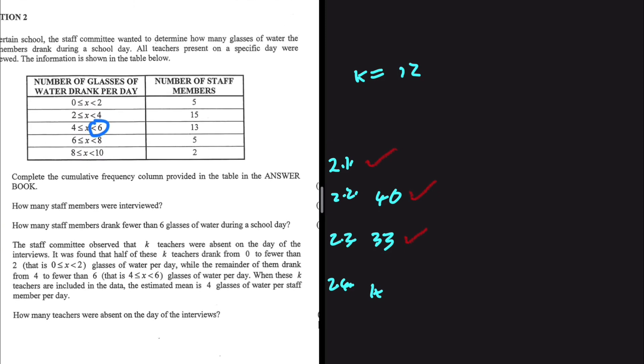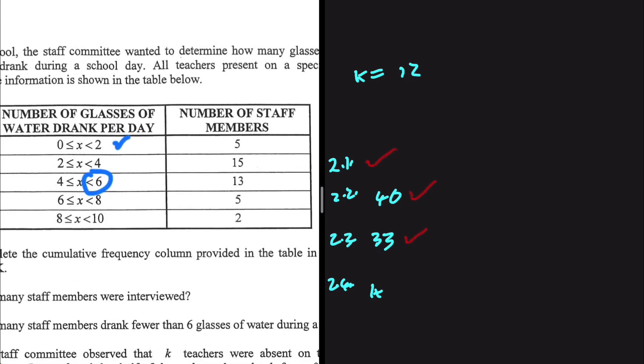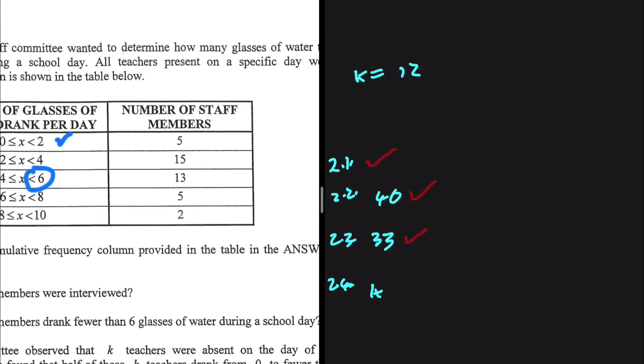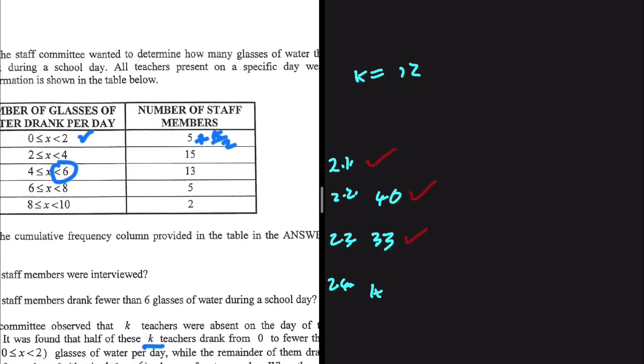So k teachers were absent and then half of these k teachers drank between zero and two glasses. So for zero to two glasses of water we have 5 plus k divided by 2, because we know that k divided by 2 teachers drink between zero to two glasses of water.